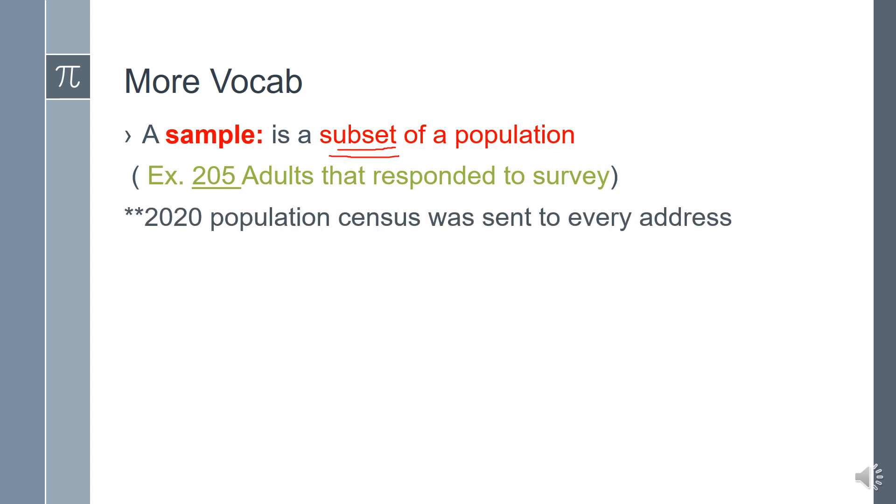Recently, everyone should have received their 2020 population census. So the population would be everyone, every household in the United States. The sample would be all of those who respond back online and complete the survey.